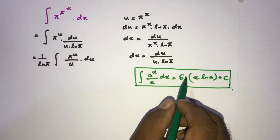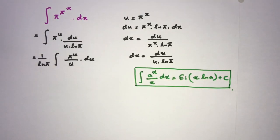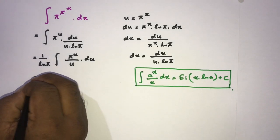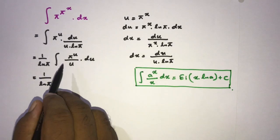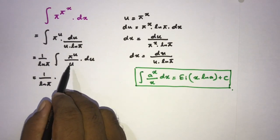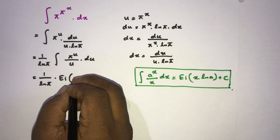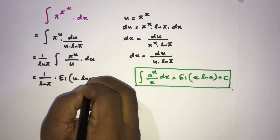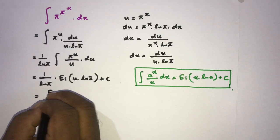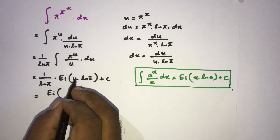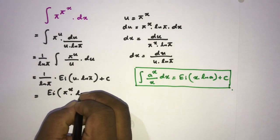The exponential integral function is a special function in the complex world. Applying the identity, we get 1 over natural log of π times Ei of u times natural log of π, plus C. Back-substituting u equal to π raised to the x, the exponential integral becomes Ei of π raised to the x times natural log of π, over natural log of π, plus C.